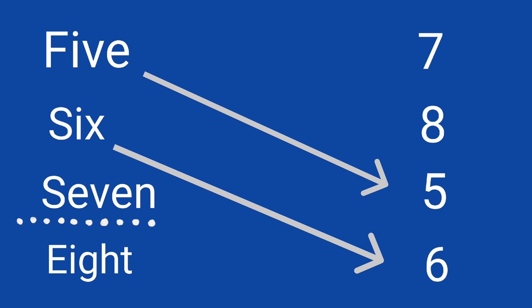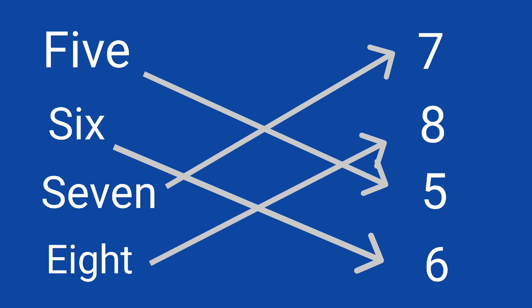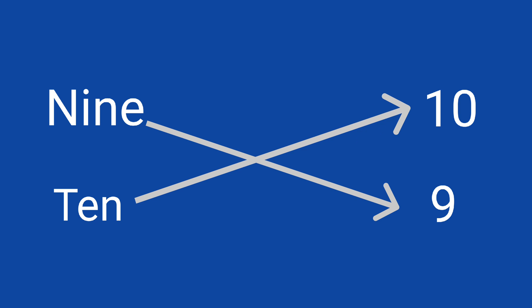S-E-V-E-N, 7. Where is 7 children? Yay! This is 7. E-I-G-H-T, 8. Where is 8? Tell me. Yay! This is 8. N-I-N-E, 9. Where is 9? This is 9. 10. T-E-N, 10. Tell me, where is 10? Yay! This is 10.